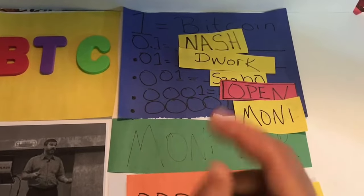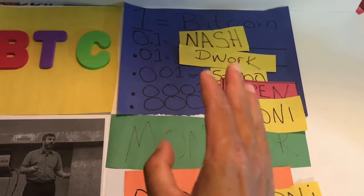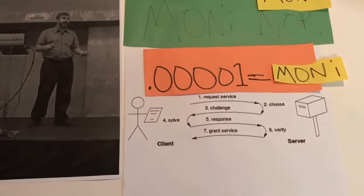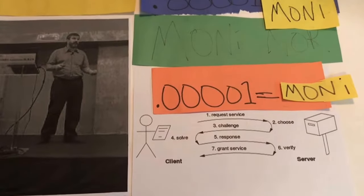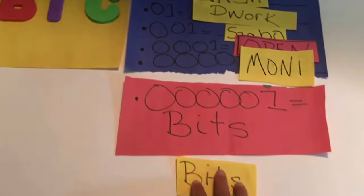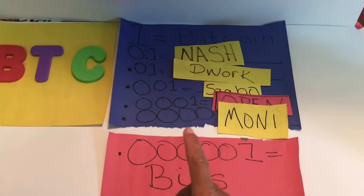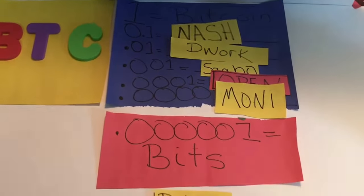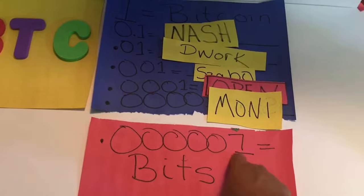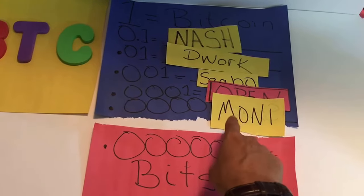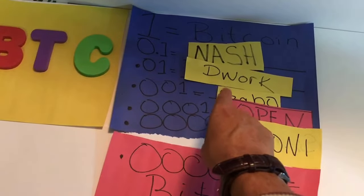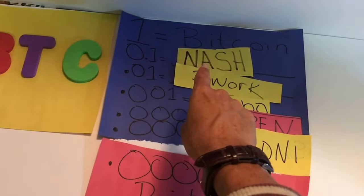The sixth decimal point is already labeled 'bits,' though I'm open to changing it — I think it's too derivative of 'Bitcoin' and could confuse newcomers. As it stands: 10 bits gives you one Moni, 10 Monis gives you the open fourth spot, 10 of those gives you one Zabo, 10 Zabos gives you one Dork, 10 Dorks gives you one Nash, and 10 Nashes gives you one whole Bitcoin.